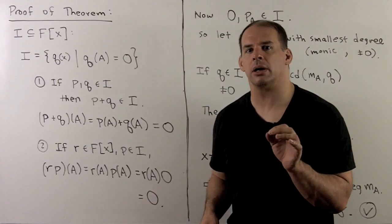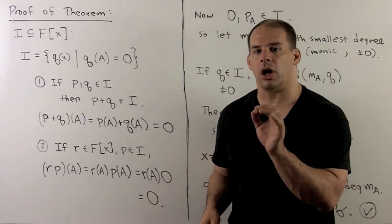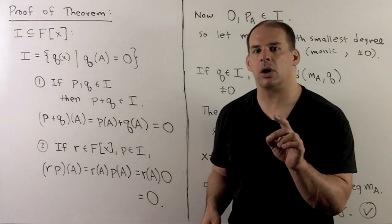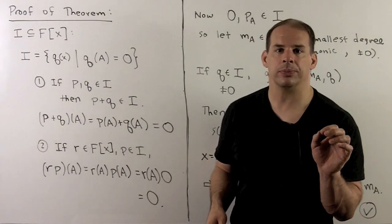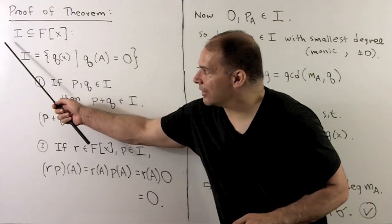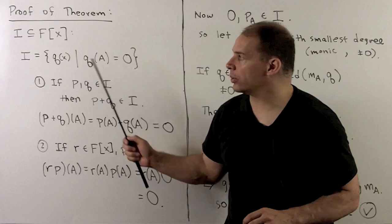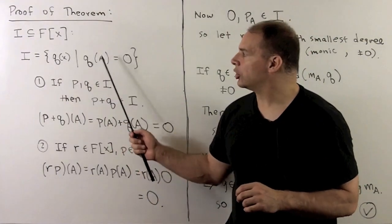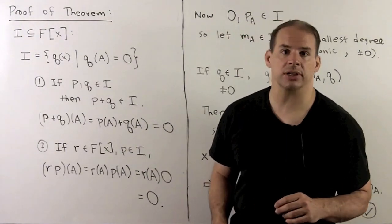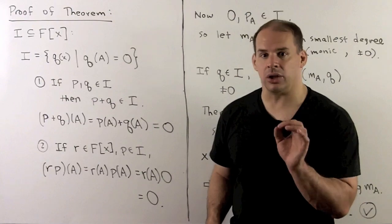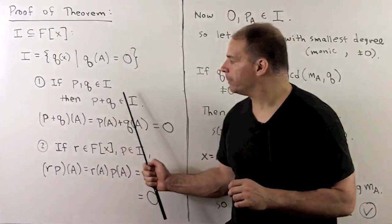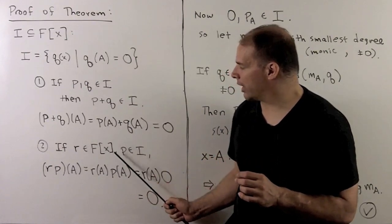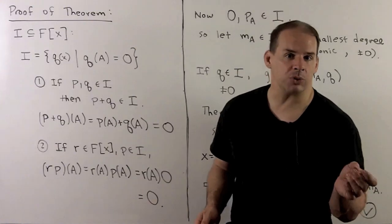We start the proof of our theorem with an example of an ideal. Recall, we're trying to find a monic polynomial of smallest degree such that we get zero when we apply it to A. Now, we define the subset I in F[X] as follows. I is going to be the collection of all polynomials Q such that Q applied to A yields the zero matrix. I is going to be an ideal.